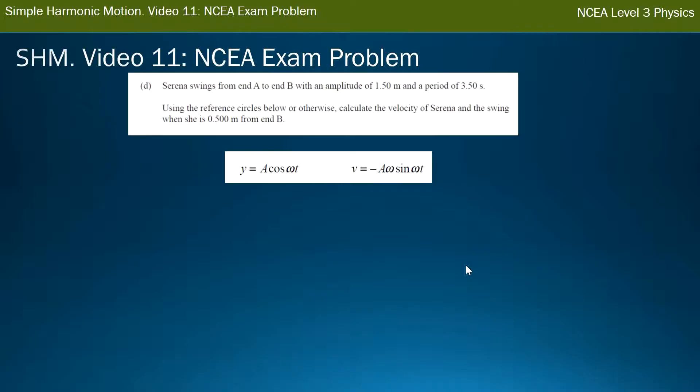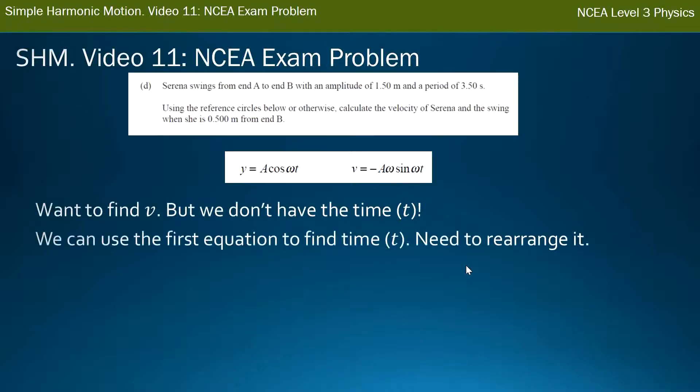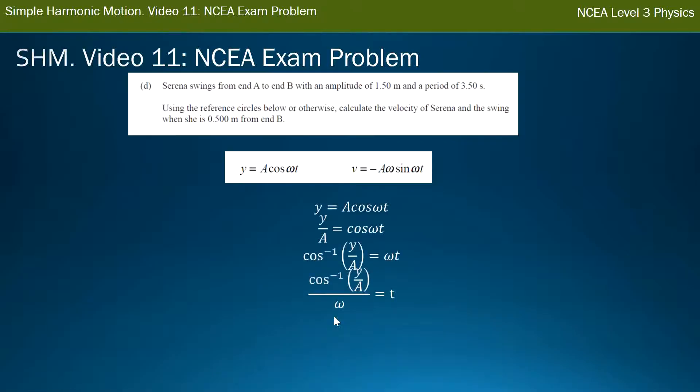Alright. So let's go back to the question again. She says, use reference circles or otherwise, calculate the velocity of Serena. So there on my right, I've got velocity equals negative A omega, which I've got now, that important information. Sine omega, got that as well. And then little t. Now little t is the time she's been swinging for. It's not the time period. It's not the 3.5 seconds. In fact, I don't have how long she's been swinging for when she gets to 0.5. Okay. So I want to find that velocity. I don't have that time. However, we can use the first equation to find time. Now this is a bit more difficult than we've done before, because normally in the first equation, we would be given the time when we can work out the displacement. Here we've been given the displacement, which is 0.5 meters from an end. We have to rearrange it to work out time.